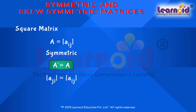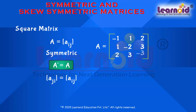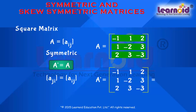For example, matrix A is equal to: minus 1, 1, 2; 1, minus 2, 3; and 2, 3, minus 3. This matrix is symmetric because A transpose is the same as A.